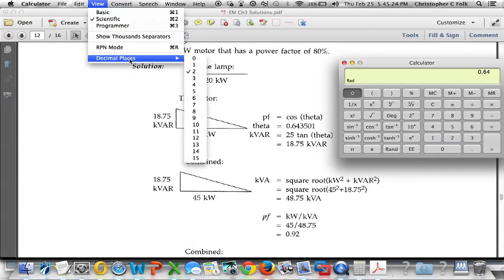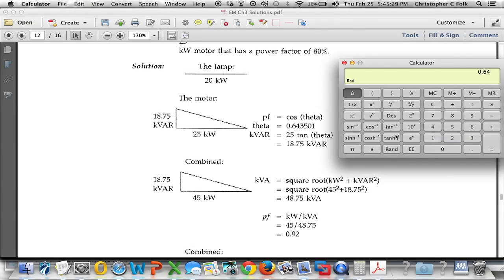So I'll make it 1, 2, 3, 4, 5 places, just so it appears to be the same. We'll do it one more time. Clear it. .8 arc cosine. And there's that same number that we had before.